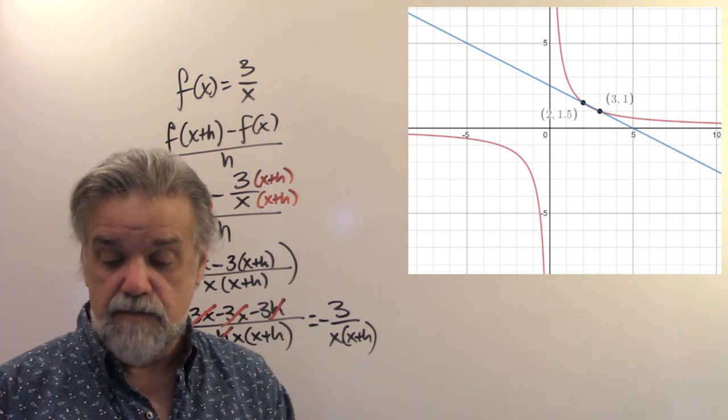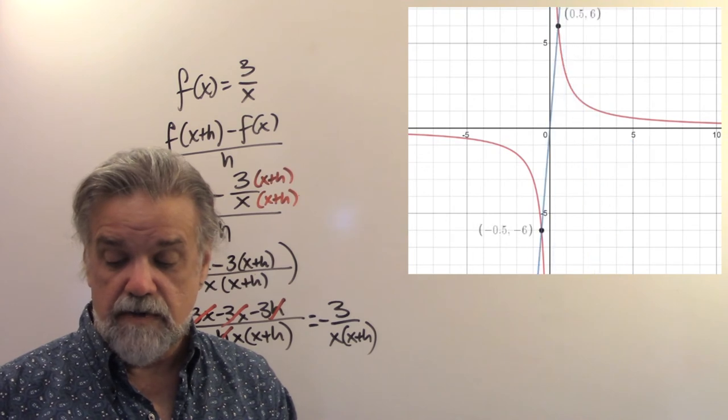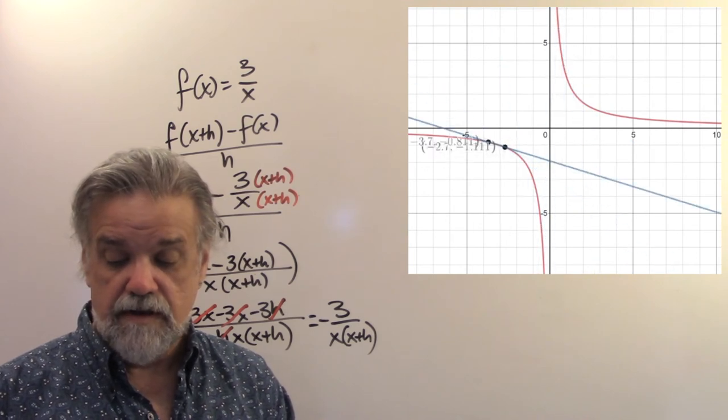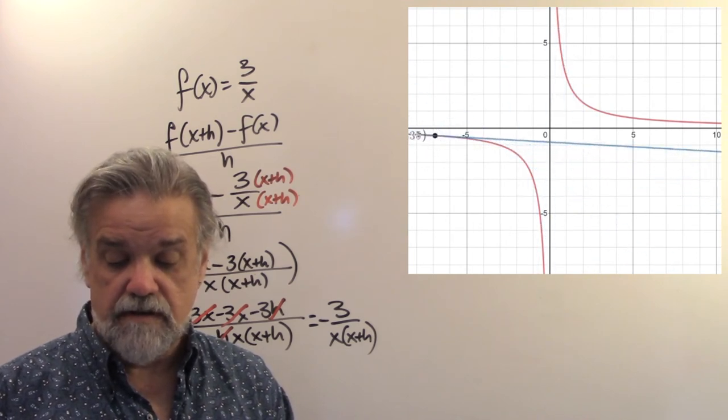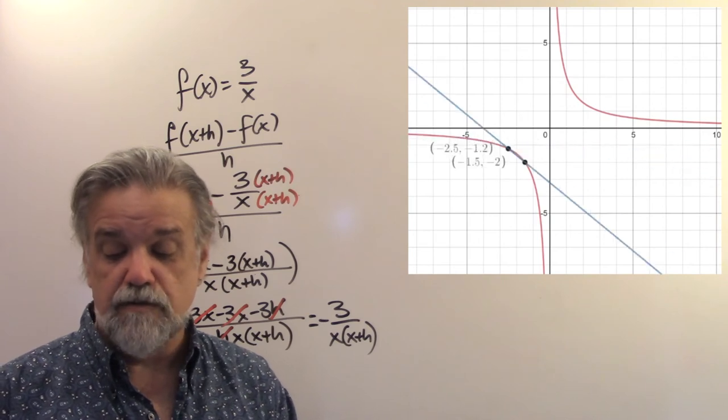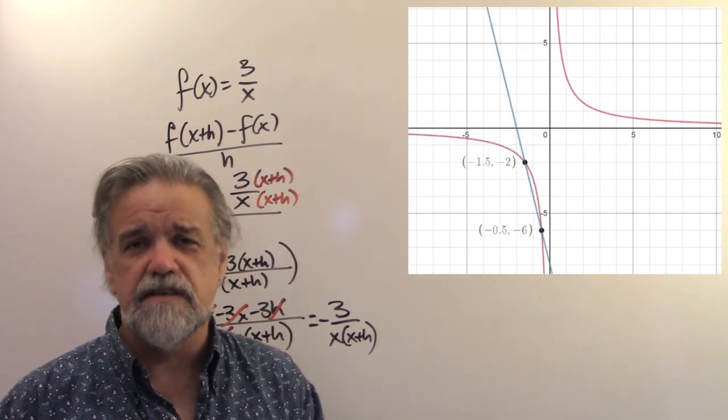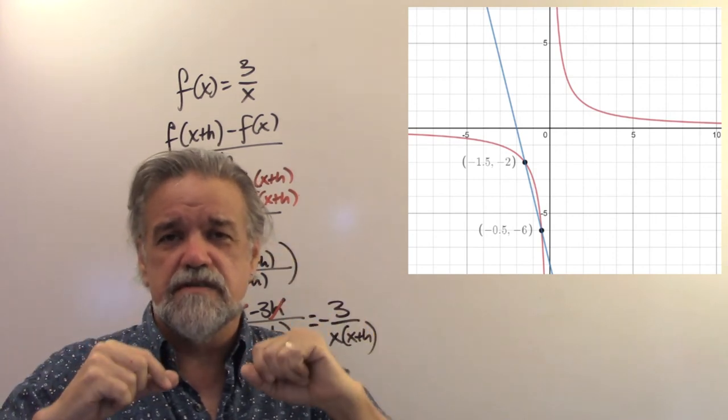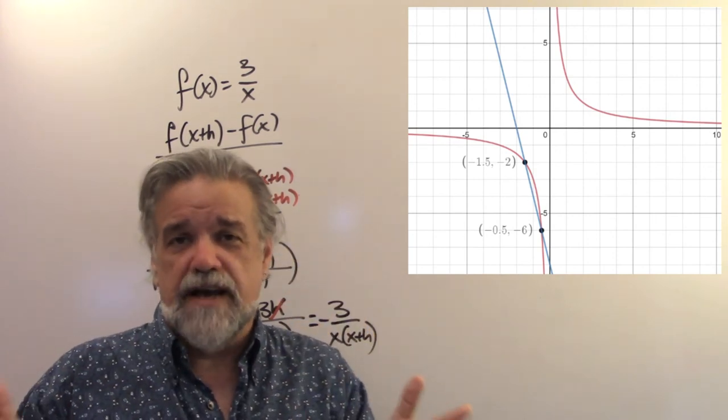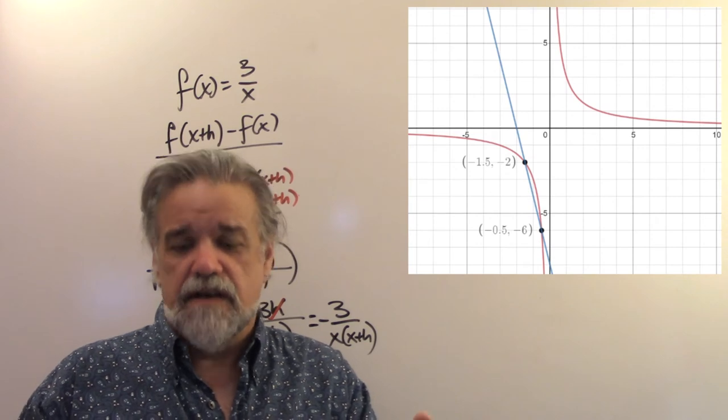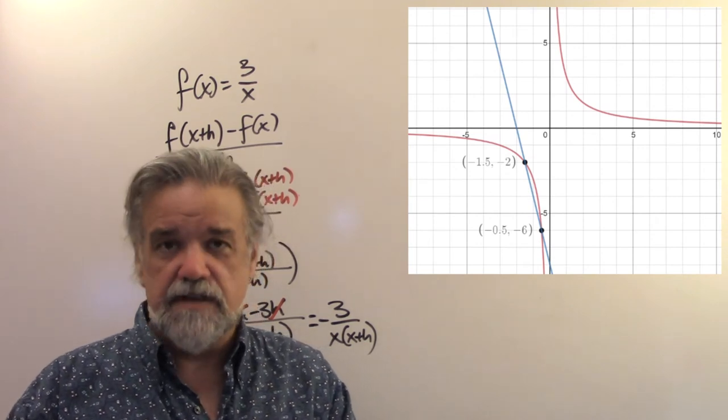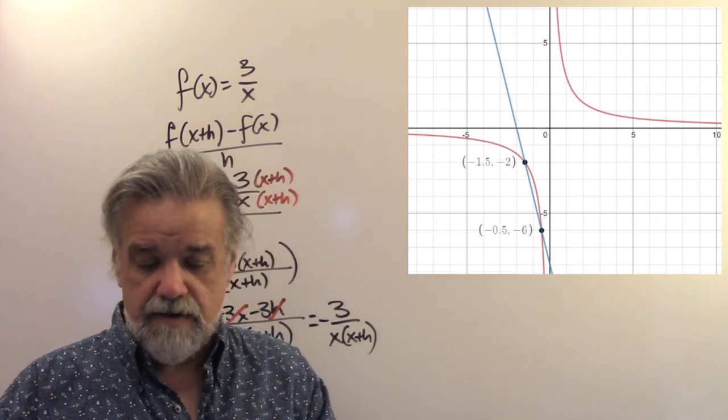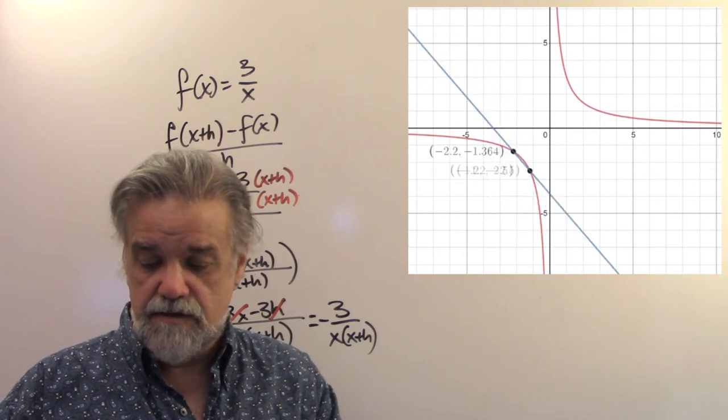And as I move my x along, you can see that it's drawing a secant line. If you remember from geometry what a secant is, a secant intersects a circle in two different places. Well, any curve actually can have a secant line. And so this secant line is intersecting our graph in at least two places here.